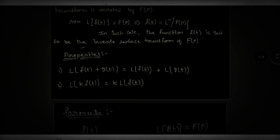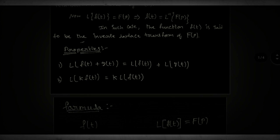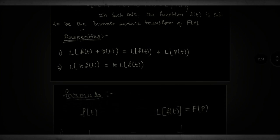Next, the properties: L of f of t plus g of t is equal to L of f of t plus L of g of t. This is the addition property. For the scalar multiplication property: L of k times f of t is equal to k times L of f of t, where k is a constant.